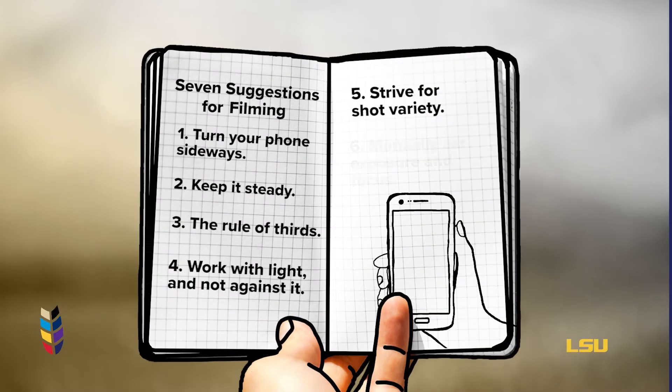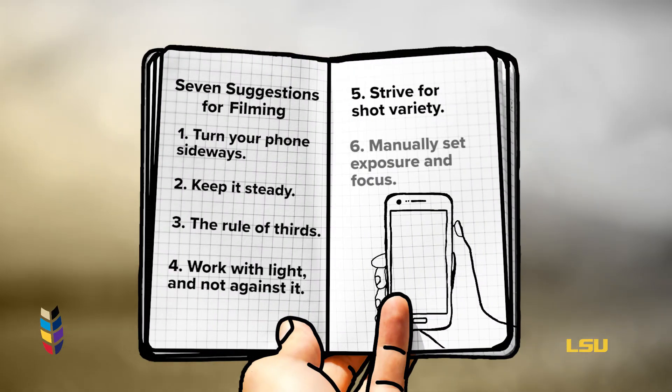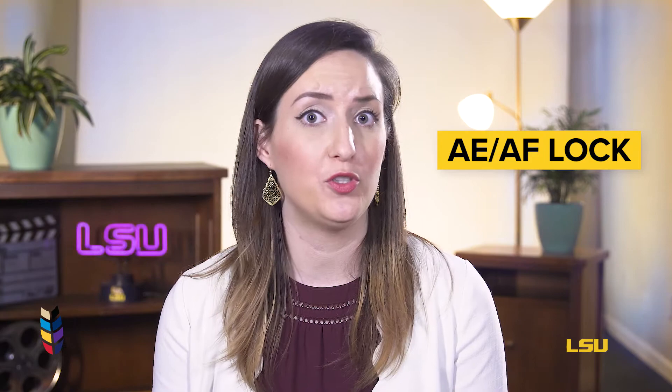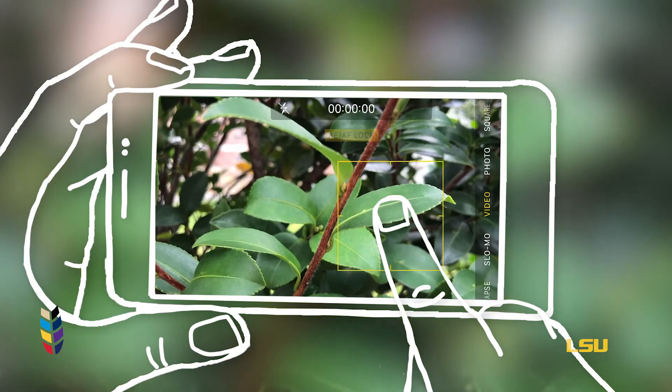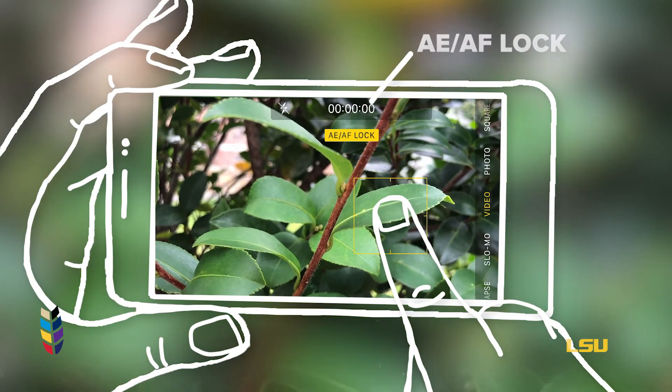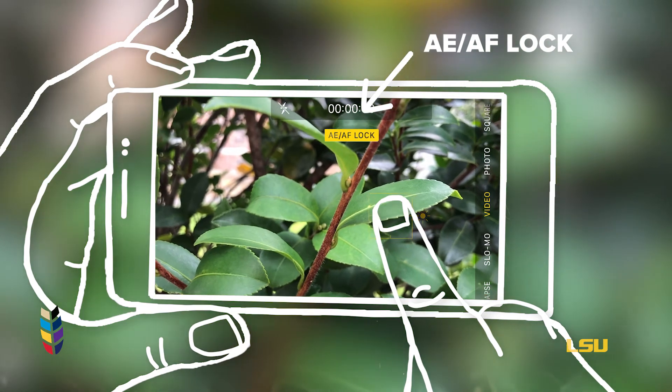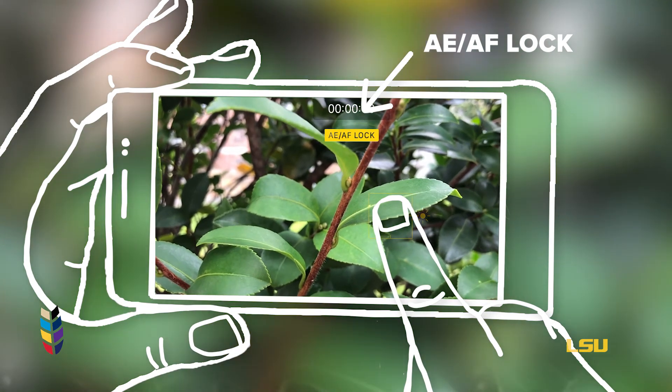Six, manually set exposure and focus. With a smartphone, the most important is the AE or auto exposure function, which prevents the exposure from changing on your smartphone when you're filming. Press and hold an area of the screen to activate the AE/AF lock function.